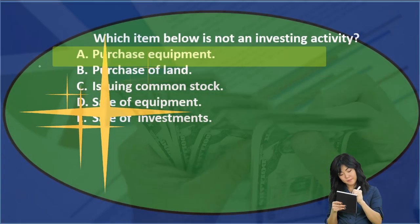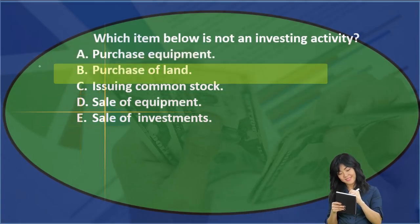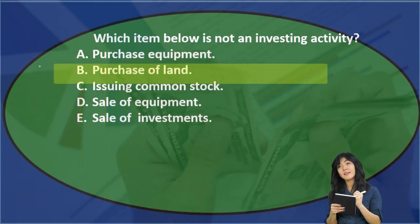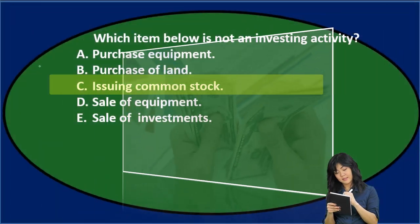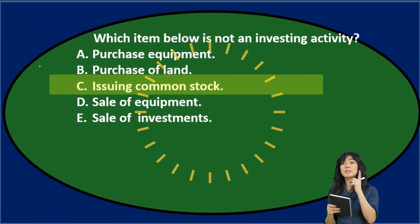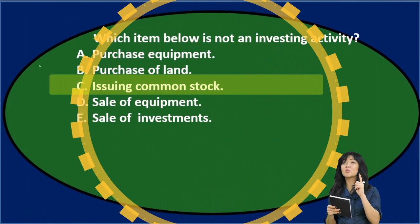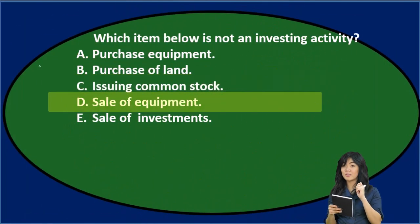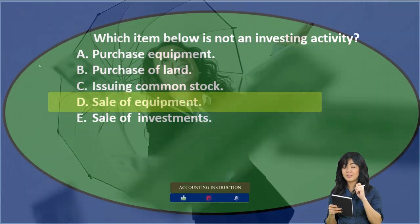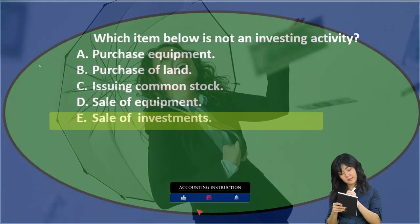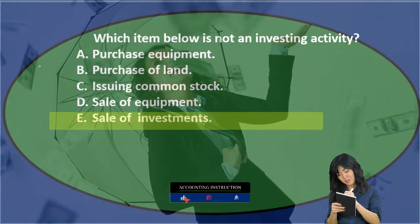A. Purchase equipment. B. Purchase of land. C. Issuing common stock. D. Sale of equipment. E. Sale of investments.